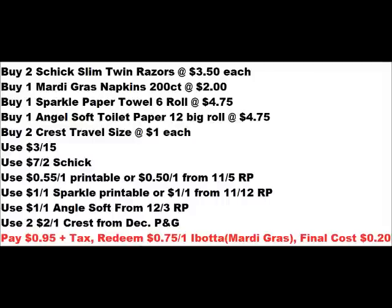You're also going to get two of the Crest trial size Pro Health toothpaste that are a dollar each. You're going to use a three-off-fifteen survey coupon, use that seven-off-two Chic printable coupon, use the 55-cent printable coupon for Mardi Gras napkins — but we also have one of those in the November 5th Red Plum, it's just 50 cents though, not 55 cents. Use a dollar off Sparkle paper towel printable coupon on the Sparkle website, or you can use that dollar-off one from the November 12th Red Plum. Use a dollar off one Angel Soft from the December 3rd Red Plum.